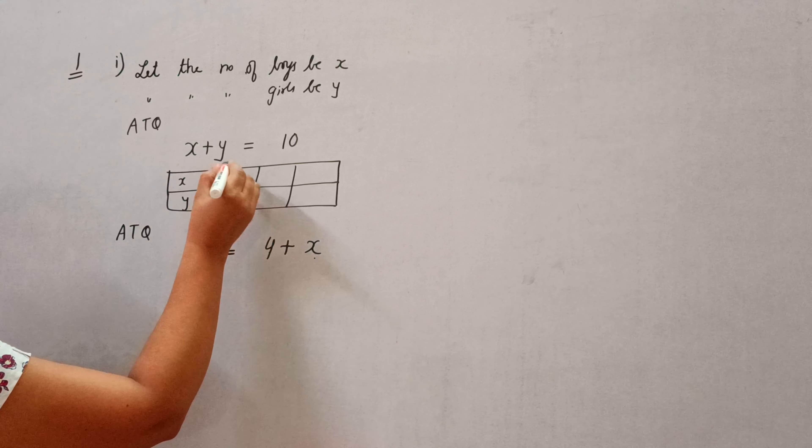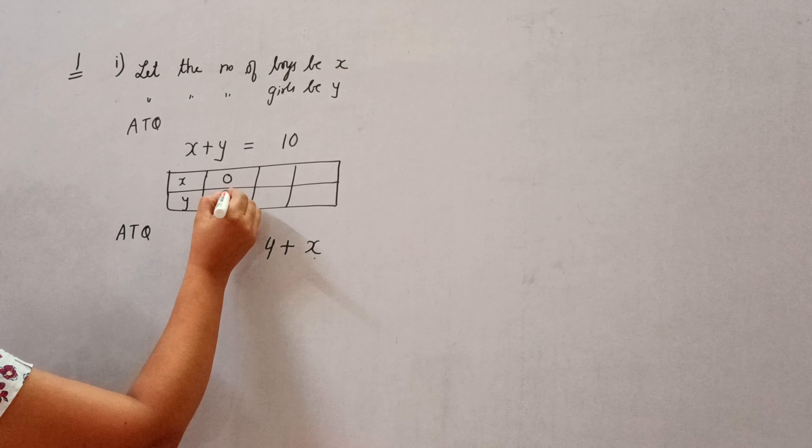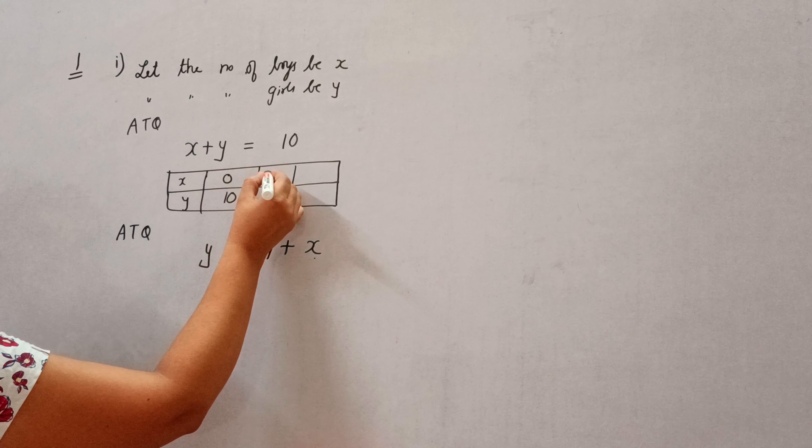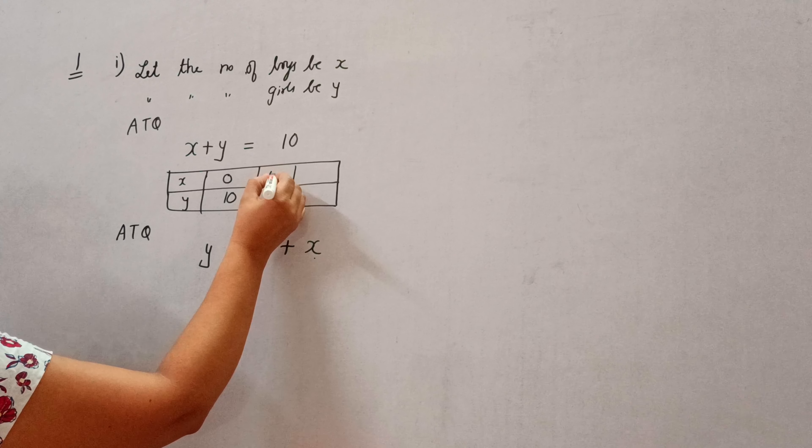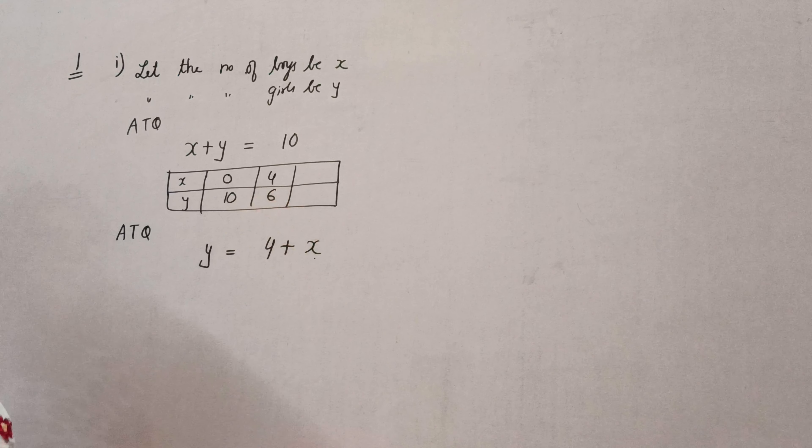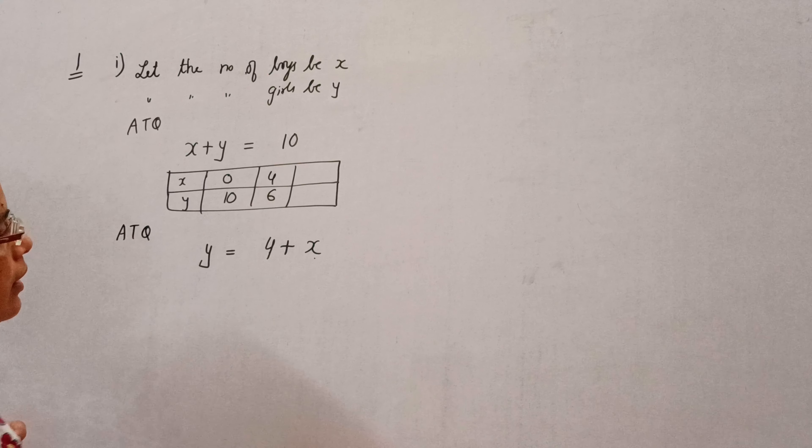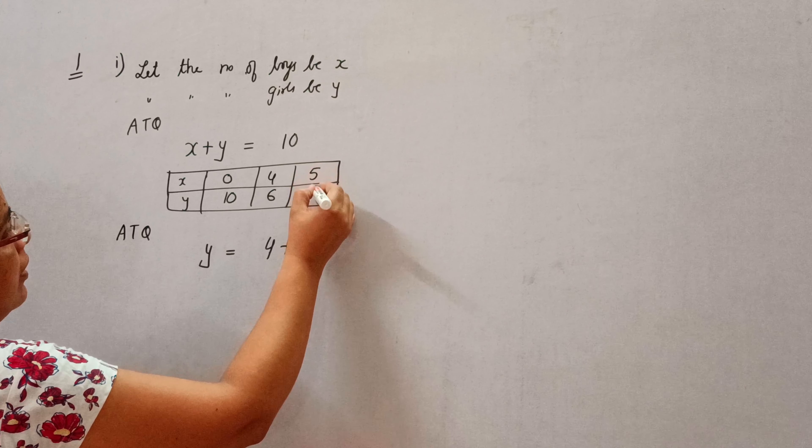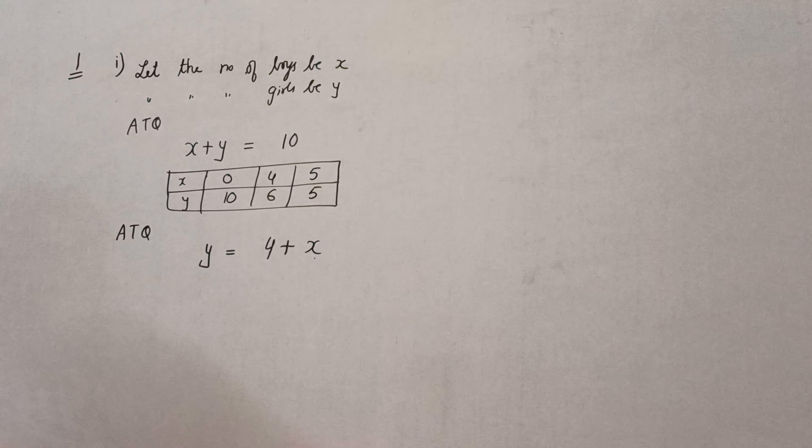So here I can take, if x is 0, then y is 10. If x is 4, then y is 6 because their total number is 10. And if x is 5, then y is also 5.